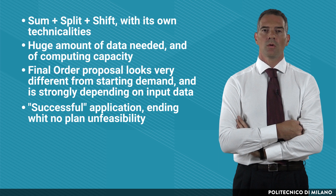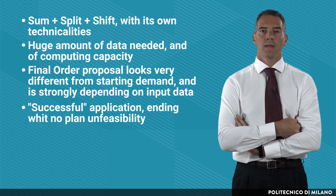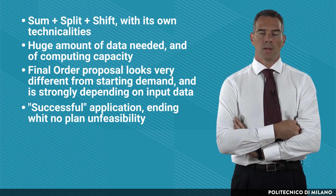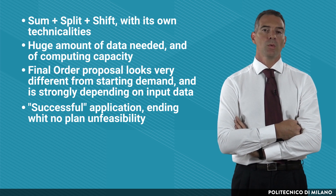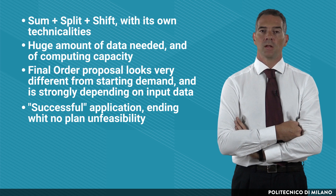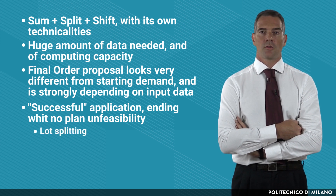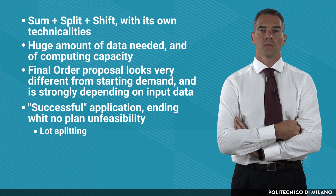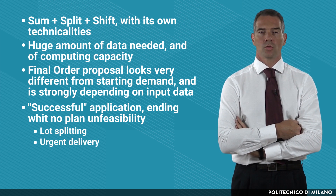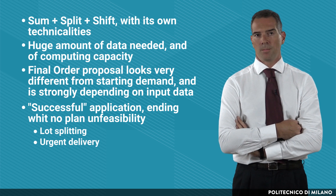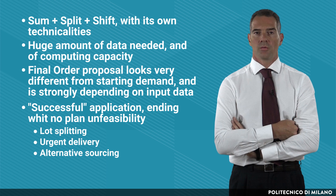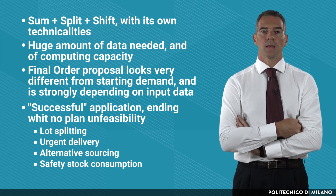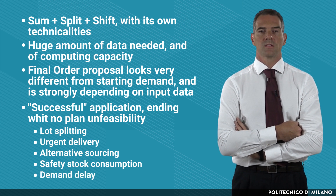In this example we saw a successful application of the method, ending with no plan infeasibility — meaning no orders were placed in the past. If some orders had been placed in the past during the shift phase, we would need to resort to feasibility recovery levers, such as lot splitting (producing only quantities for which components are available), urgent deliveries to shorten production or supply lead times, alternative sources or suppliers, use of safety stock, or ultimately delaying demand, which results in a loss of service level.